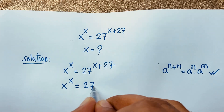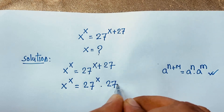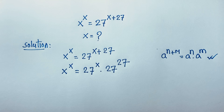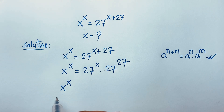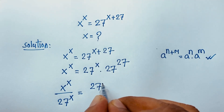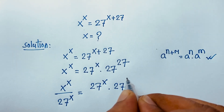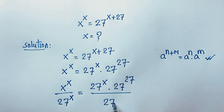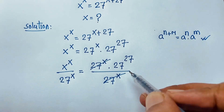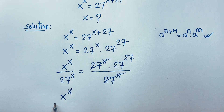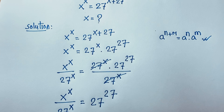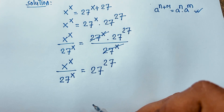I can write 27 power x times 27 power 27. Now at this moment, I divide both sides by 27 power x. So here, x to the power x over 27 power x is equal to 27 power x times 27 power 27 over 27 power x. The 27 power x terms cancel out, and we find x to the power x over 27 power x is equal to 27 power 27.